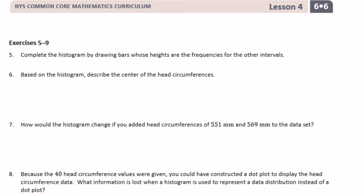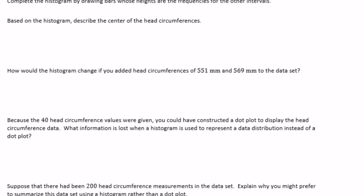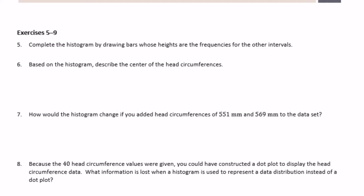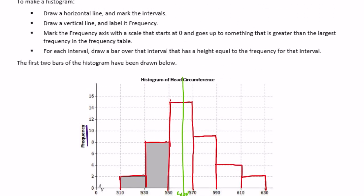Based on the histogram, describe the center of the head circumference data. Looking at the histogram, the center appears to be around 560 millimeters. This is somewhat an opinion — your answer can vary, but it should be somewhere around 560 millimeters, or anywhere between about 550 and 570 millimeters.